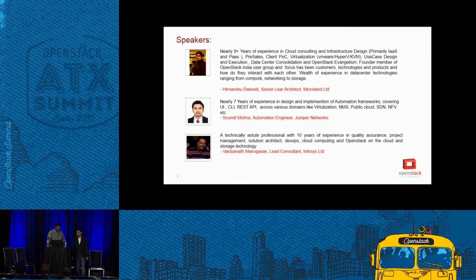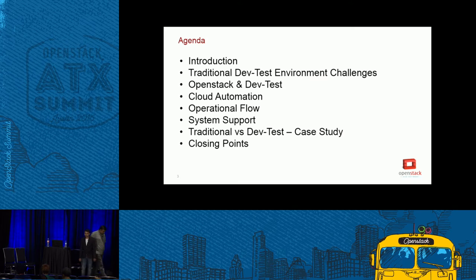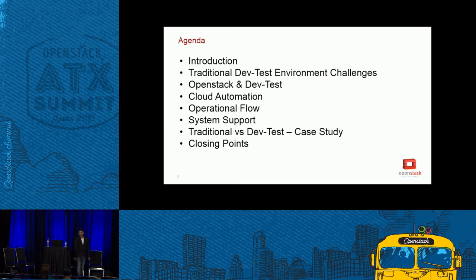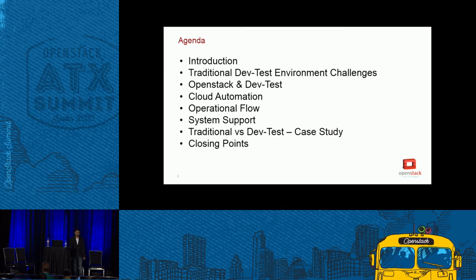Today we will start with the agenda. We will begin with the introduction, then talk about the challenges in traditional DevTest enterprise environments, then see how an OpenStack-based DevTest Cloud is built and how we migrate from traditional to OpenStack-based DevTest Cloud. We'll cover cloud automation, operational flows, system support, a case study comparing traditional versus DevTest cloud, and then summarize the closing points.